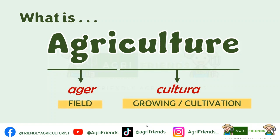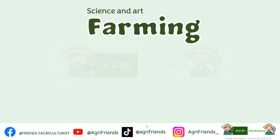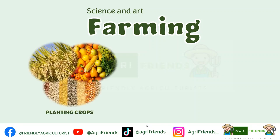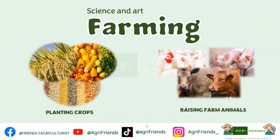Field growing or field cultivation is also known as farming. But the term farming is not only limited to planting or growing crops — it also includes raising animals, commonly known as animal farming or animal husbandry.